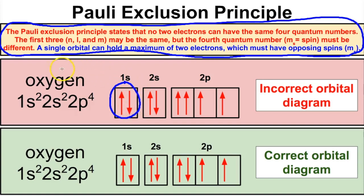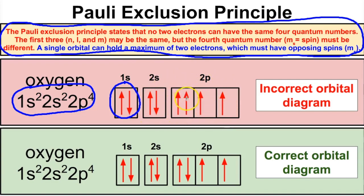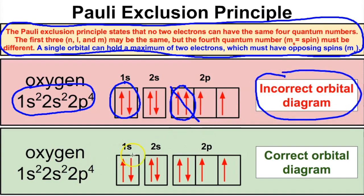Let's look at the electron configuration of oxygen: 1s2 2s2 2p4. If we want to draw the orbital diagram, this example shown would be incorrect. In the 1s orbital, one electron spins one way and the other spins the opposite way — that's acceptable. In the 2s orbital, same thing. But in the 2p orbital, both electrons in the first p orbital are spinning in the same direction, which violates the Pauli Exclusion Principle. These two electrons must spin in opposite directions.